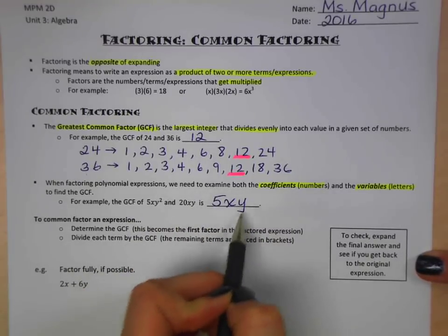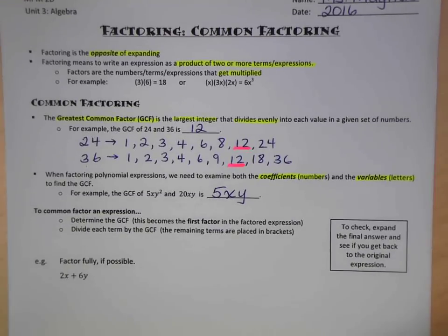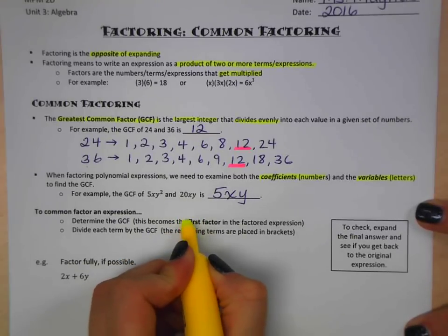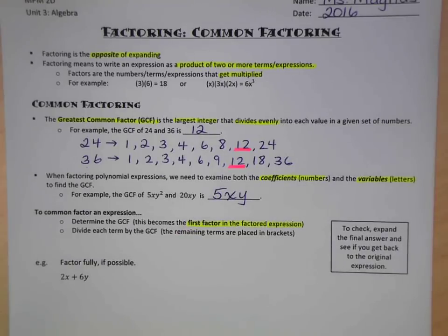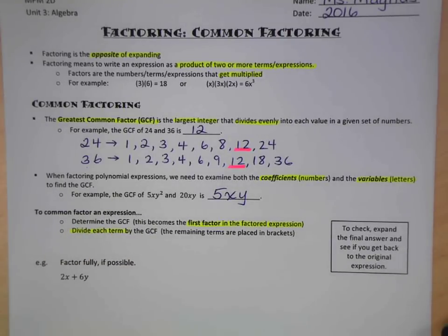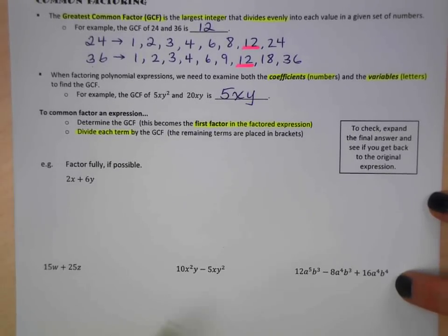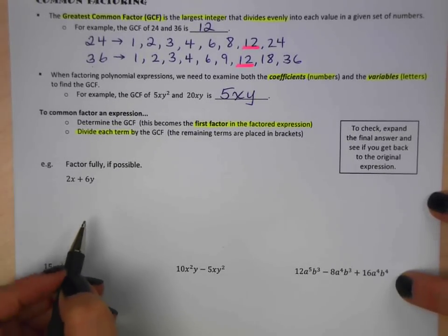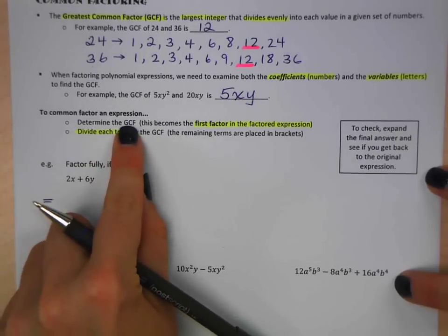Now let's go into more detail about how we get this number. In order to actually common factor an expression, we need to first determine the greatest common factor. This is going to be the first factor in the factored expression. So it's going to be something that gets multiplied by the rest of it. Then we actually divide each term by the greatest common factor. I'm going to write it the long way, just so you can see what's happening. But you shouldn't have to write this step out.